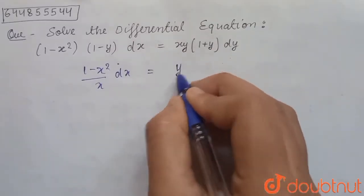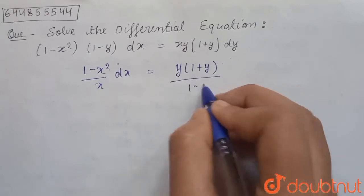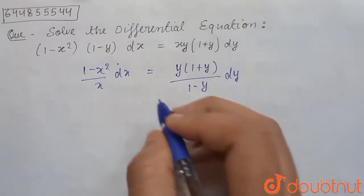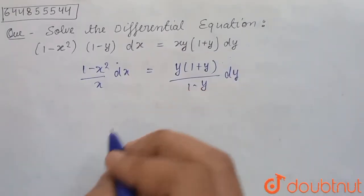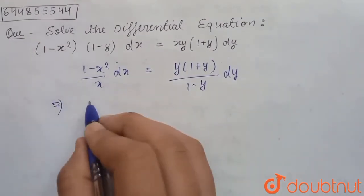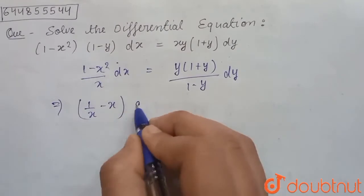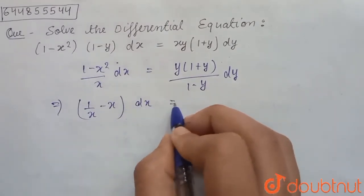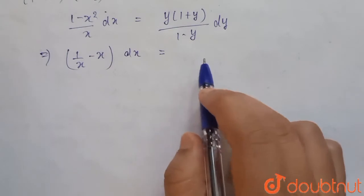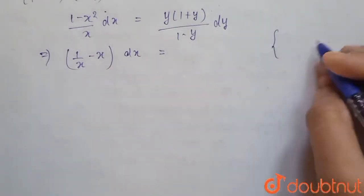Now we can write the left side as (1/x - x) dx. We have to simplify the right side, so for this let us make a substitution.